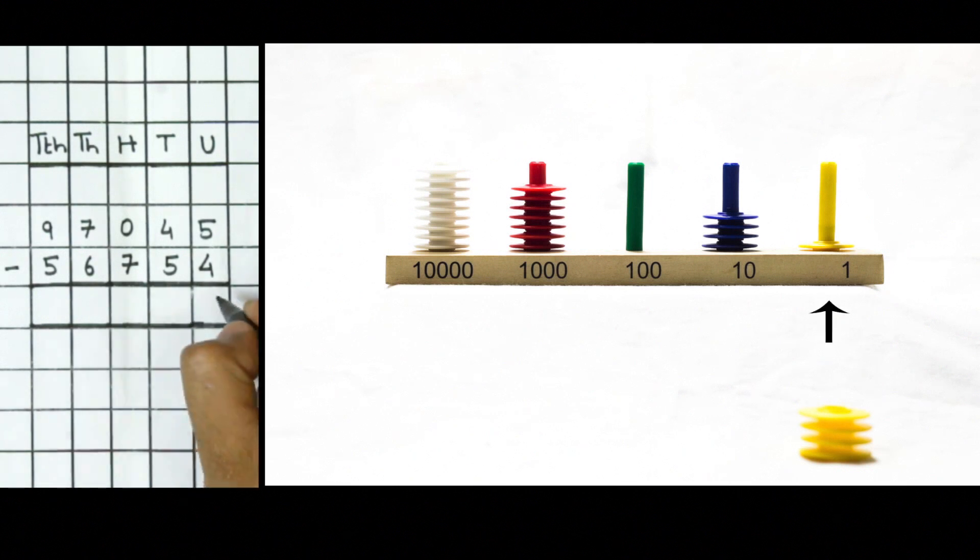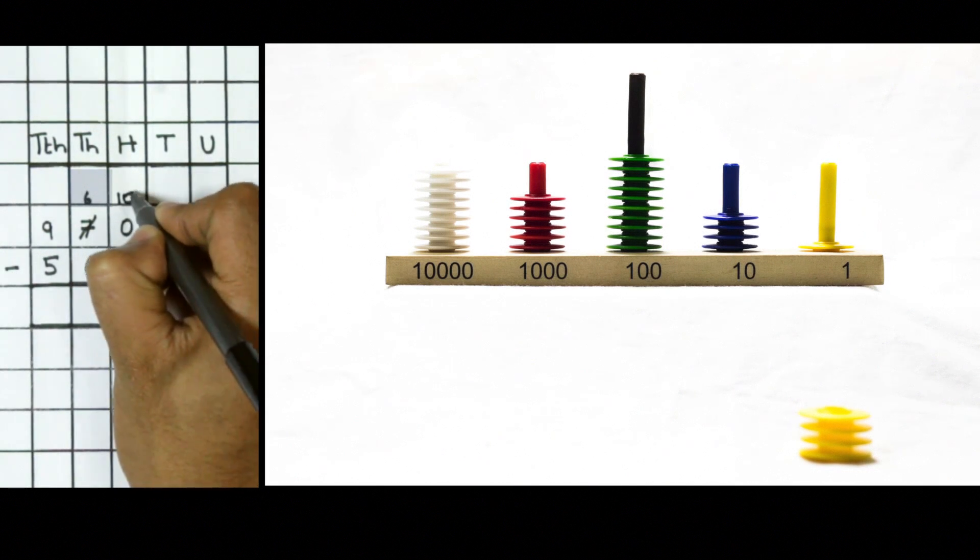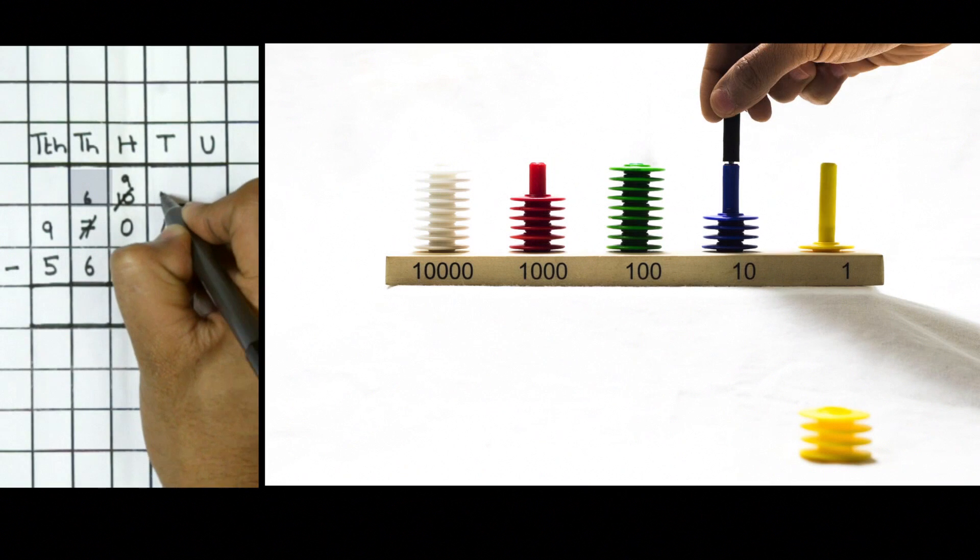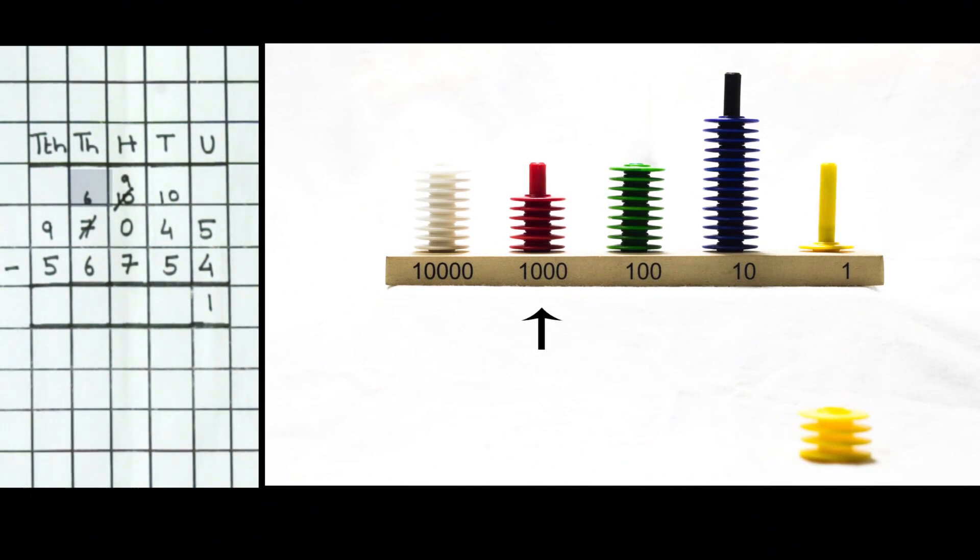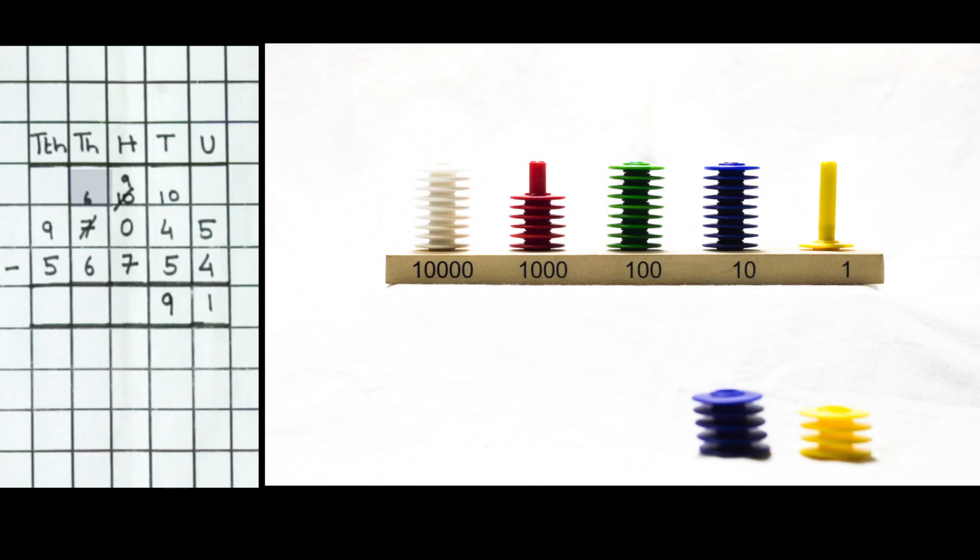Ensure that the procedure starts from the units place. Remove four yellow rings from the abacus and keep carefully aside. One yellow ring remains on the abacus. In the tens place, we cannot subtract five from four unless we borrow. But there are no hundreds in 97,045, so we need to move one place further left. Borrow a thousand and convert it to 10 hundreds. Now borrow 100 and change it for 10 tens. Notice that only six rings of thousand and nine rings of hundred are left on the abacus. Subtract five tens from fourteen tens. Now nine tens are remaining on the abacus.